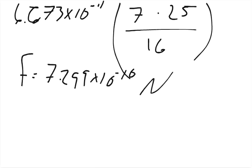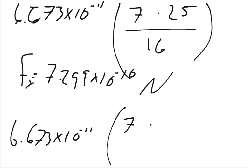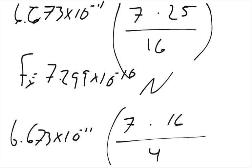And so that's the force of the x component. And then we want to find the y component. So we set up the same thing: 6.673 times 10 to the negative 11th times 7 times 16 in this case, over the distance, which is 2 squared, so over 4. And when you multiply this out, you get the y force of 1.868 times 10 to the negative 9th.